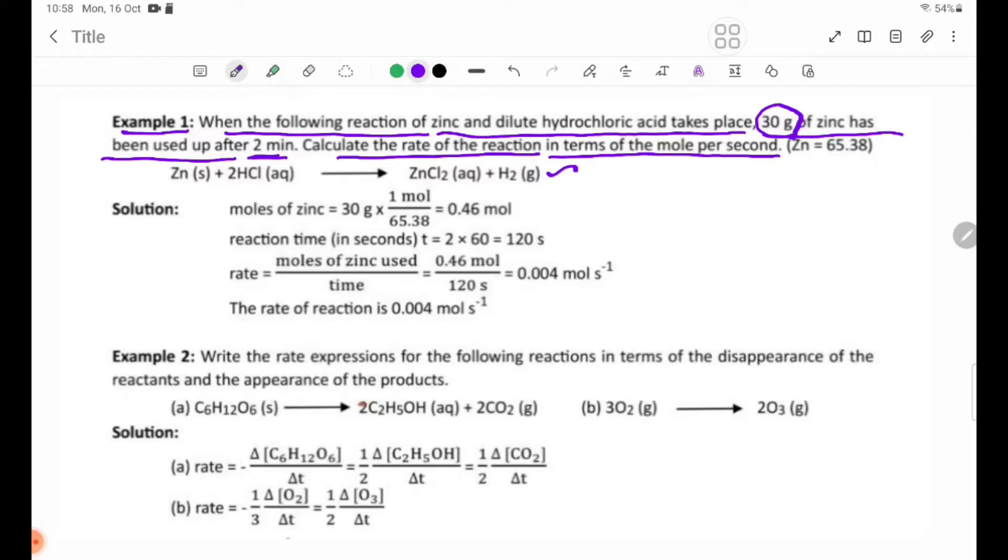Solution: moles of zinc = 30g ÷ 65.38 g/mol = 0.46 mol. Reaction time in seconds = 2 × 60 = 120 s. Moles of zinc used = 0.46 mol. Rate = 0.46 mol ÷ 120 s. The rate of reaction is 0.004 mol per second.